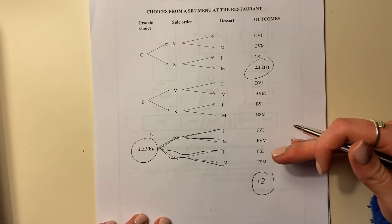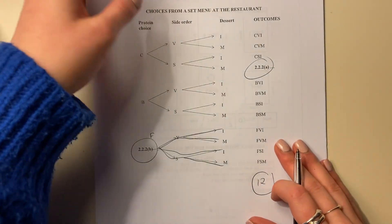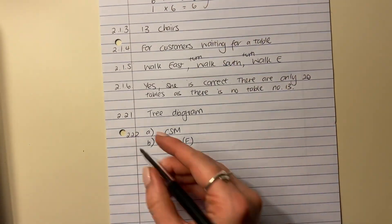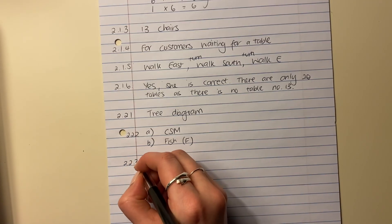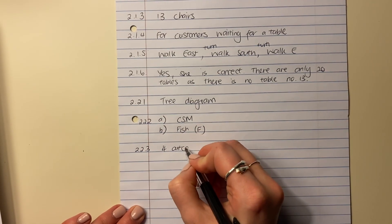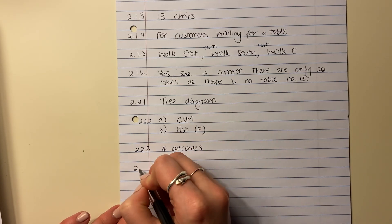So there's 12 outcomes in total. Four of them are chicken, four of them are beef, and four of them are fish. So for beef, how many outcomes are there? Well, 2.2.3, there are four outcomes. So just be careful over there.